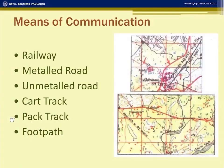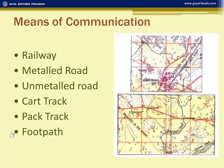The area is easily accessible. If 'motorable in dry season' is written on the map, it means the area can be accessed in dry season by car, bullock cart, or on foot through the stream or river. This shows the area receives seasonal rainfall.